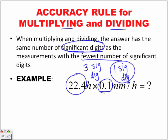Which means our answer has to have only one significant digit. So when we multiply these two together, we get an answer of 2.24 millimeters. I'm not going to go through how the units cancel out — we'll look at that when we get to those chapters. So the answer is 2.24 millimeters.